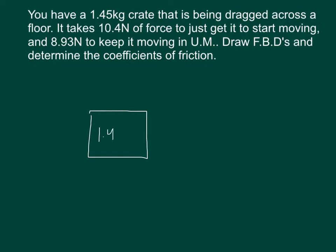First of all, we've got our mass of 1.45 kilograms. Force of gravity, which is just mass times 9.8, equals negative 14.21 newtons. The normal force will also be 14.21 newtons, but positive because it's upward. Here's our applied force.